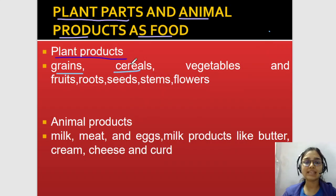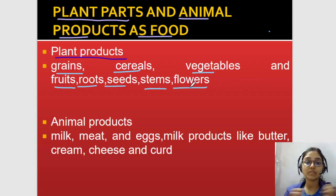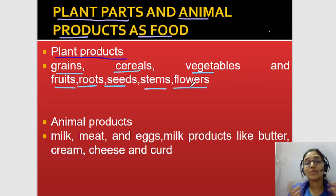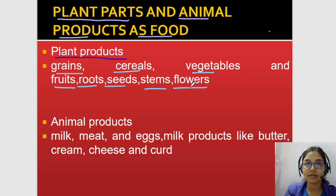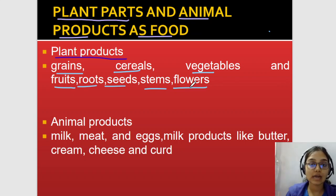Grain cereals — grain and cereals are more or less the same. Then vegetables and fruits. Roots, stems, seeds, flowers — all these are different plant products. Now, plant product means something that comes from a plant. For example, paneer comes from milk, so paneer is a milk product. These days vegan paneer is also available from plant sources. So 'product' means what source it is coming from.